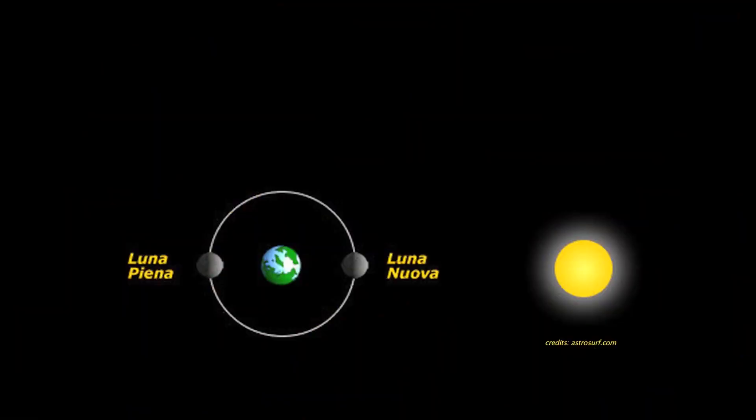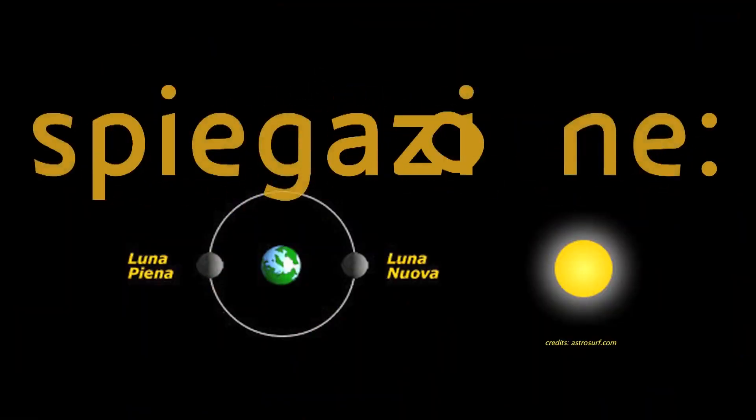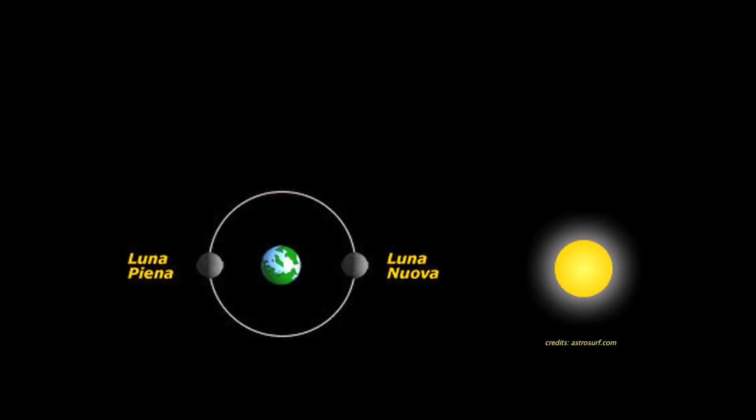In the new moon phase, the moon is positioned between the Earth and the Sun, and the sun's rays only illuminate the part of the moon that we cannot see.